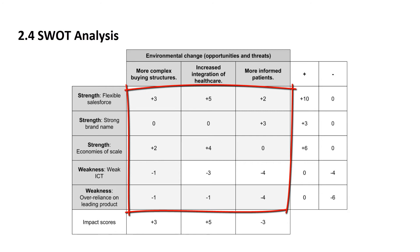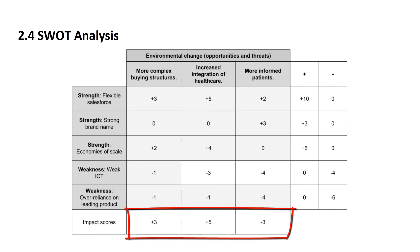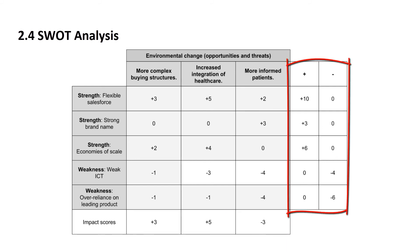Now we are in the table, making scores in terms of pluses and minuses to see how each strength or weakness scores against a given environmental change. At the end, we can summarize pluses and minuses to see on the bottom how favorable or unfavorable a given environmental change is for us. For instance, having more informed patients is the least favorable environmental change for us, while increased integration of healthcare really plays in our favor. On the right side, we can see how strong or weak each environmental factor is — our flexible workforce is our biggest strength, while over-reliance on the leading product is our biggest weakness.